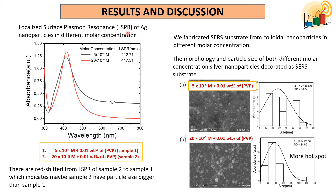This is the result for the localized surface plasmon resonance of silver nanoparticles at different molar concentrations. We can see a shift in the LSPR wavelength — a red shift from sample 2 (higher molar concentration) to sample 1, which indicates that sample 2 may have a larger particle size than sample 1. After drop casting the colloidal silver nanoparticles onto the glass substrate, we characterized the SERS substrate using FESEM. The morphology and particle size results confirm that sample 2 has a bigger nanoparticle size than sample 1.